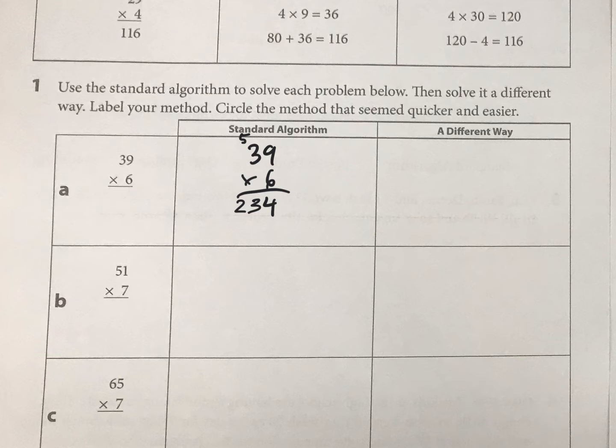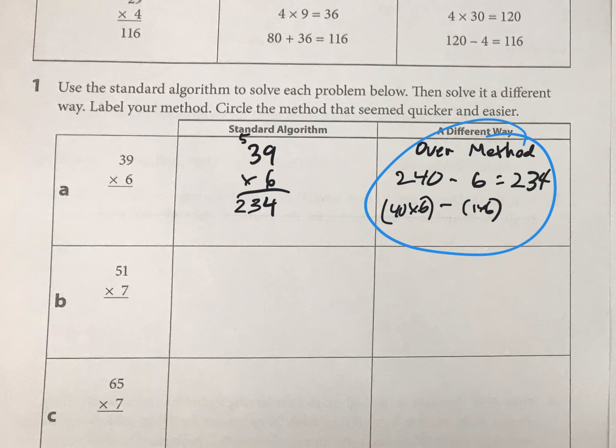For another way, I prefer the over method, so let me write that. And I would do basically 240 minus 6. So if you need to know what I did there, I did 40 times 6 and then 1 times 6, which is also 234. What do I prefer? What do I think is better? I definitely think this is a better way to do it because you're understanding what's happening more.